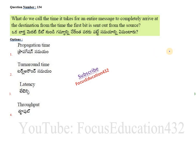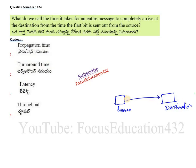Next question: what do we call the time it takes for an entire message to completely arrive at the destination from the time the first bit is sent out of the source? For example, data travels as 1s and 0s from the source machine to the destination machine. The time it takes from when the first bit leaves the source until it reaches the destination is known as latency.